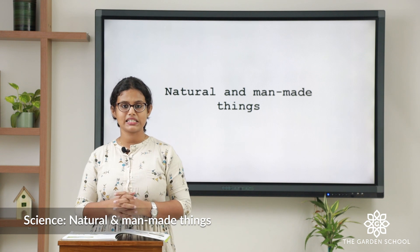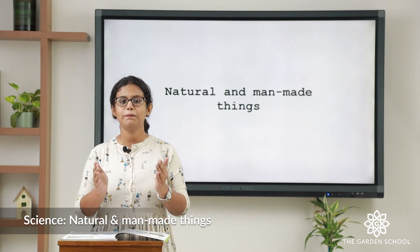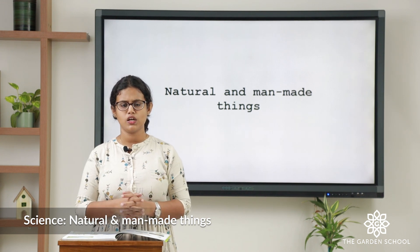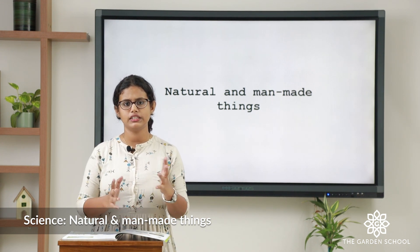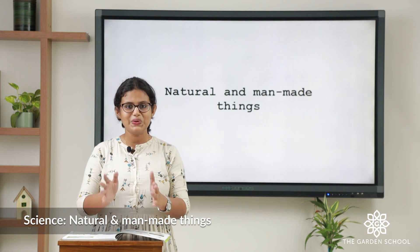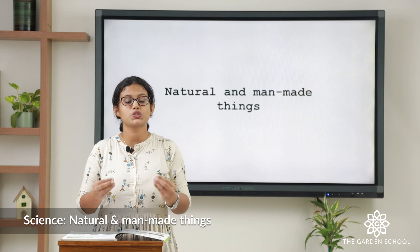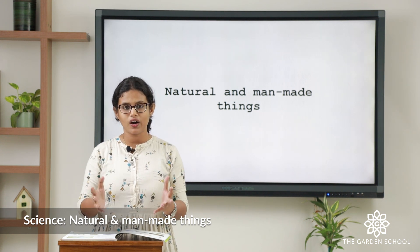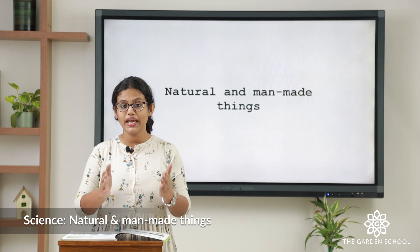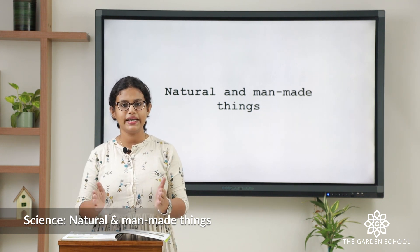Then what about man-made things? Things which are made by people — we call them as man-made things. For example, the table. Do we get a table directly from the nature? No. We people make it according to our needs. So we call it as a man-made thing.